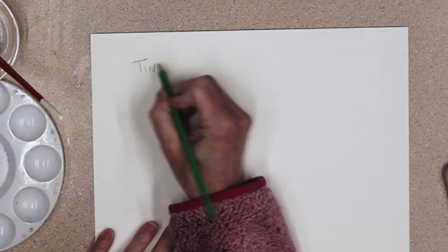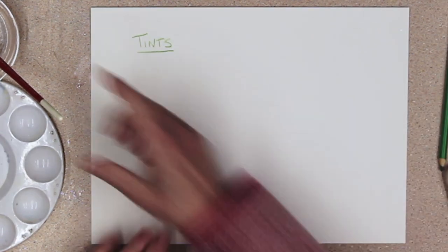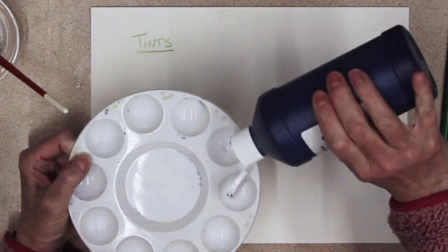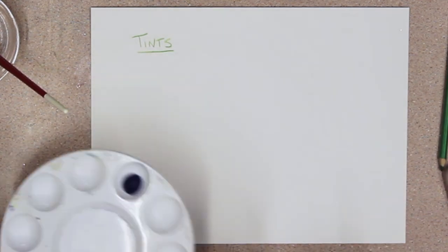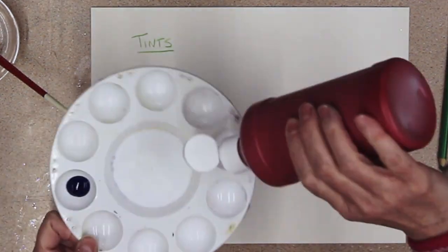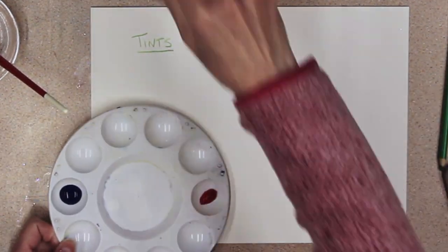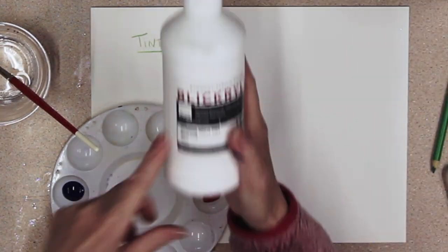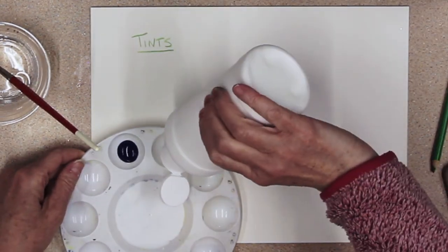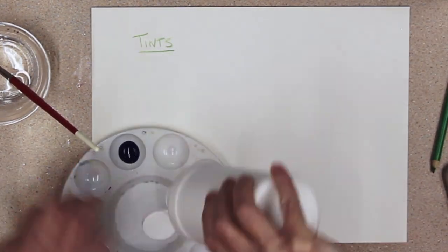I'm going to start with tints and I'm going to use the blue. Now put out the red for the shades, but first I'm going to do tints with white. You need white to create tints.